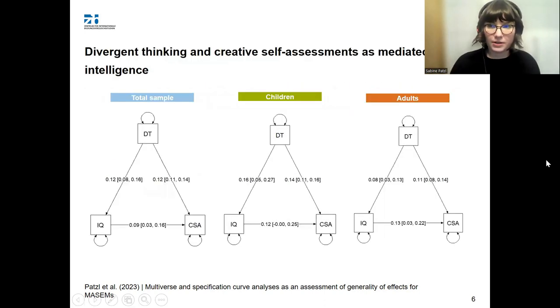Just a quick heads up, these are all preliminary data, so please don't interpret them. We just wanted to give you an idea how our models look like. For example, we are looking at the relationship between divergent thinking and creative self-assessments and testing whether they are mediated by intelligence. We're also doing subgroup analysis, so we look at the different models depending on whether children were assessed or adults were assessed.